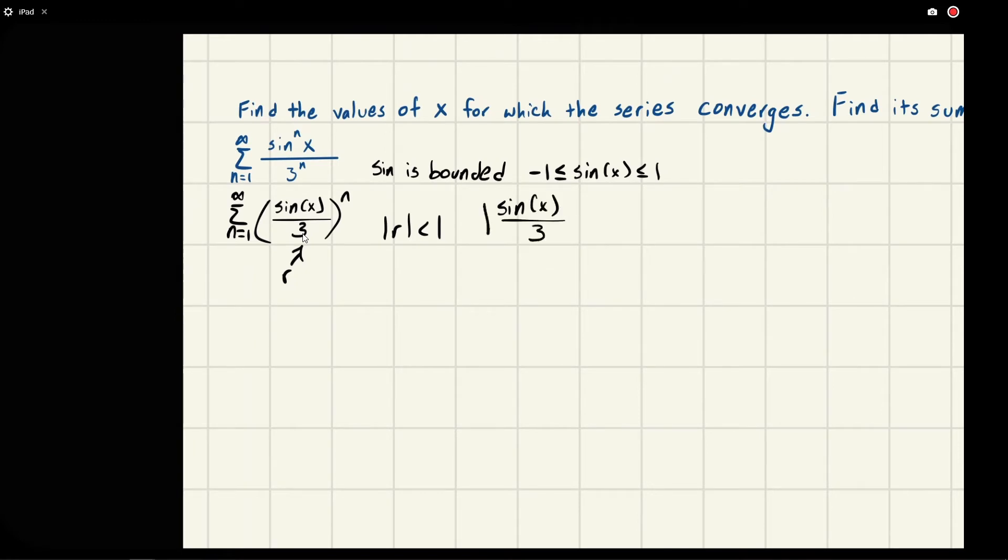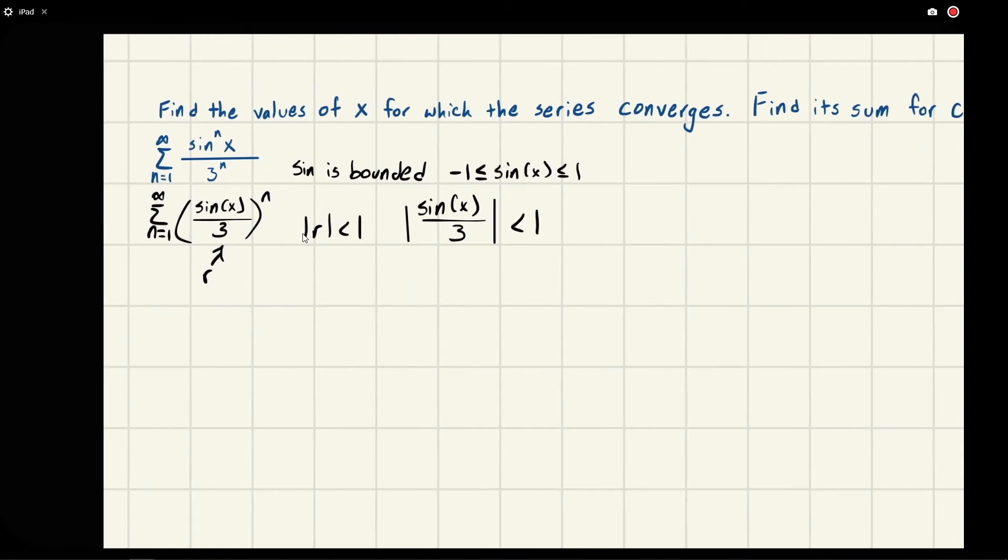If you really want to, you could rewrite it like this too. You could say that the magnitude of sine x over three has to be less than one. If we do this, we're going to get that sine x has to be less than three and greater than negative three.